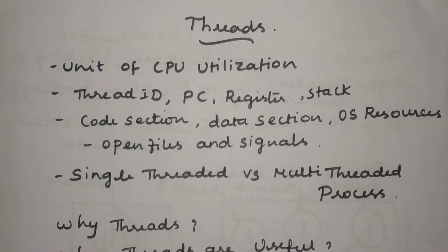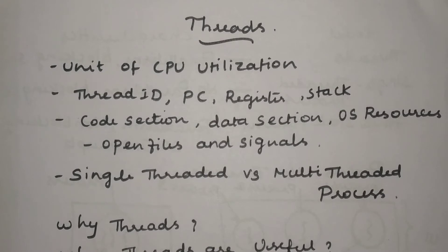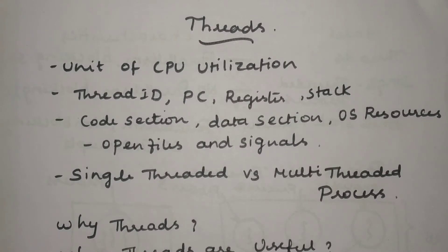First you have to get the input — the file name. Once you get the input, you have to open that file. After opening that file, you need to select the particular page you want to print. You are going to print only the first page, not the entire content. Then you proceed with the print option and press enter. All these are the sequence of operations that we need to perform for a single process.